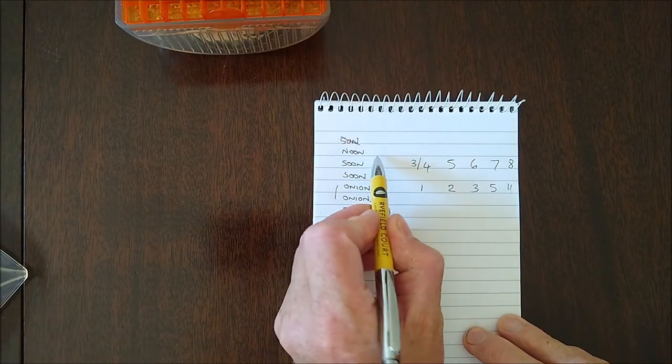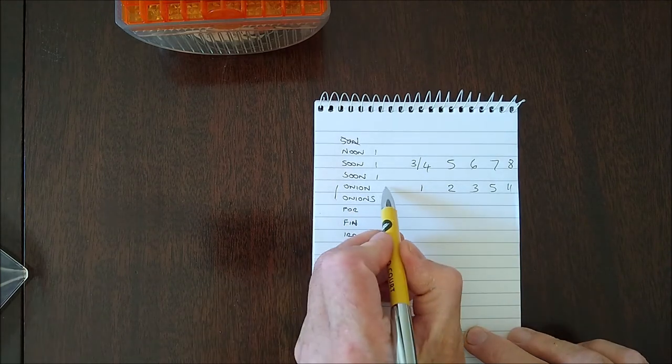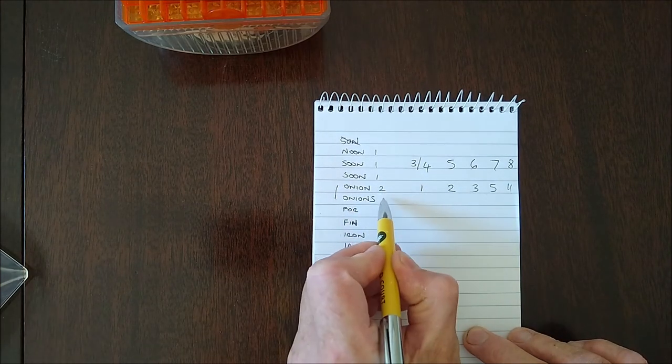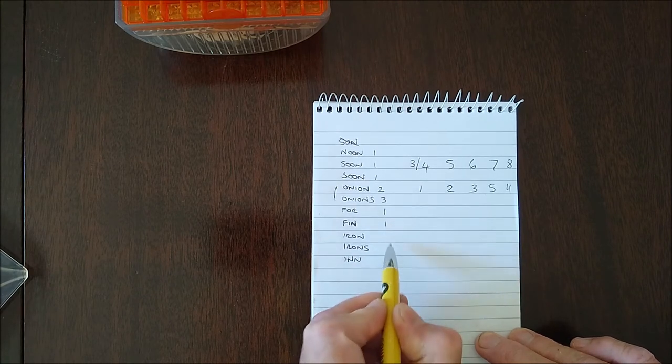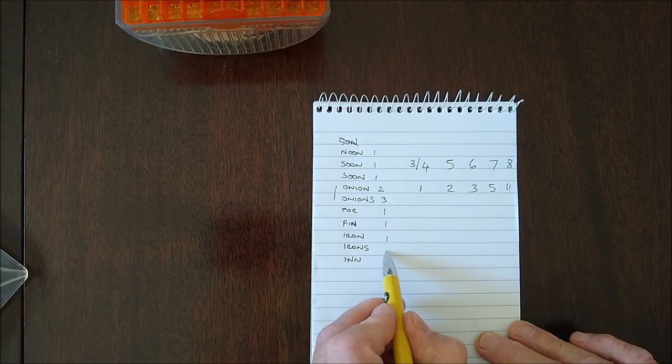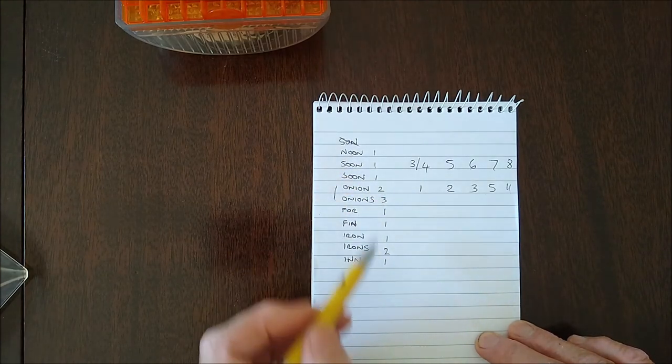So NOON would score one, as would both SOONs. ONION would score two. ONIONS would score three. FIN would score one. IRON would score one. IRONS would score two. IN would score one. So you total up that list.